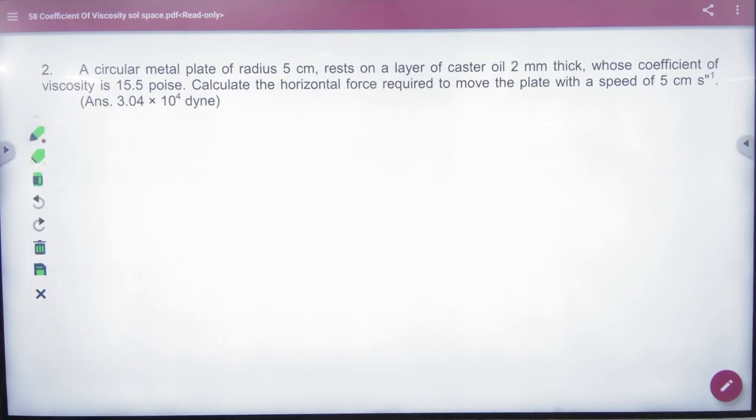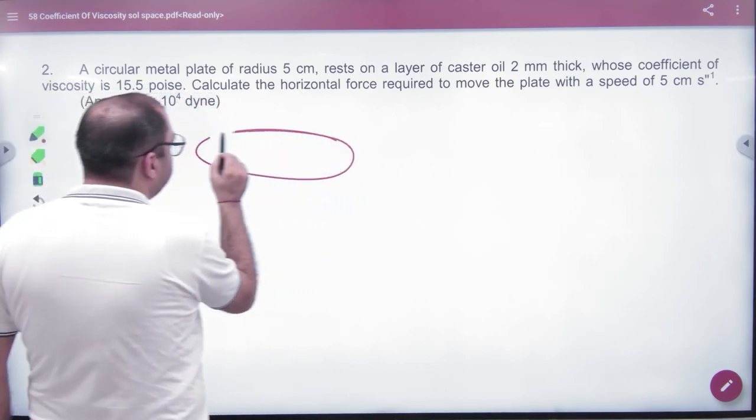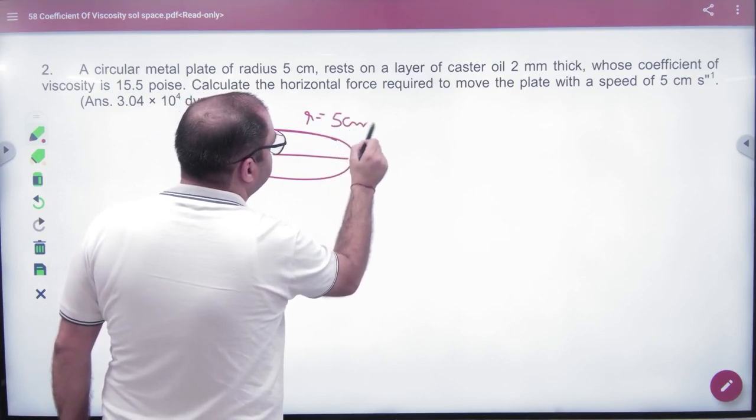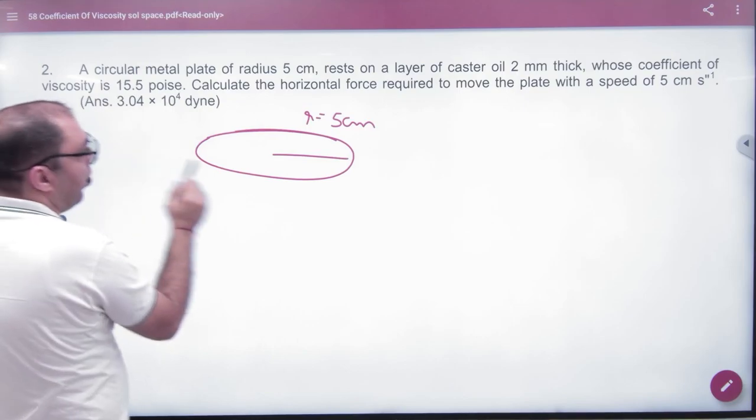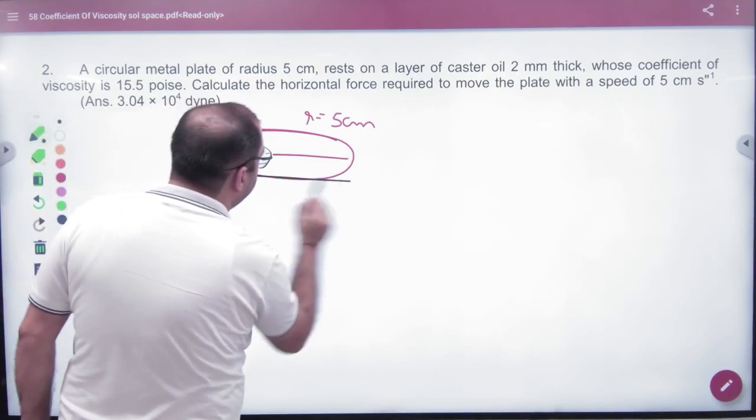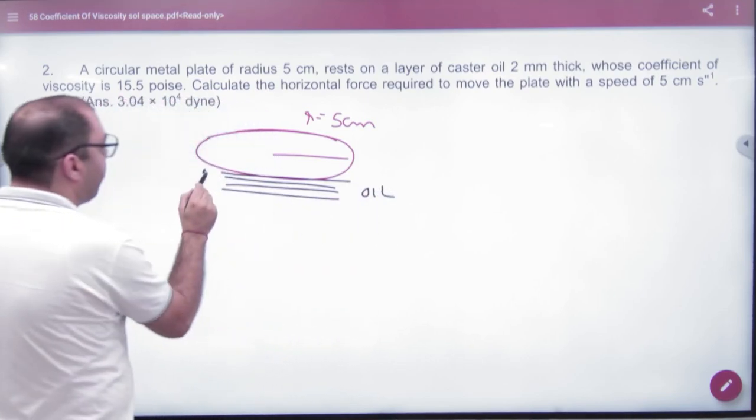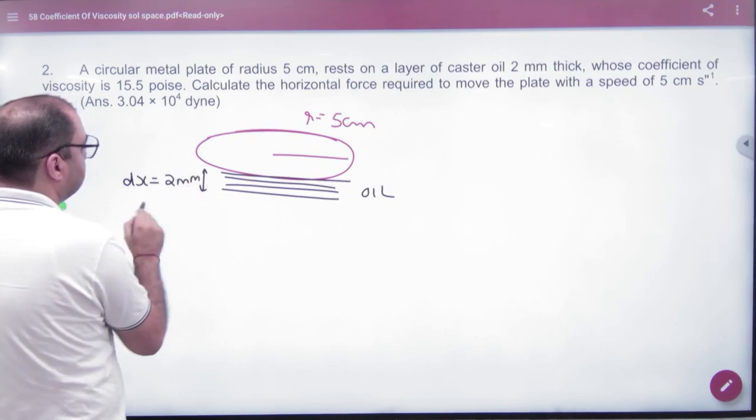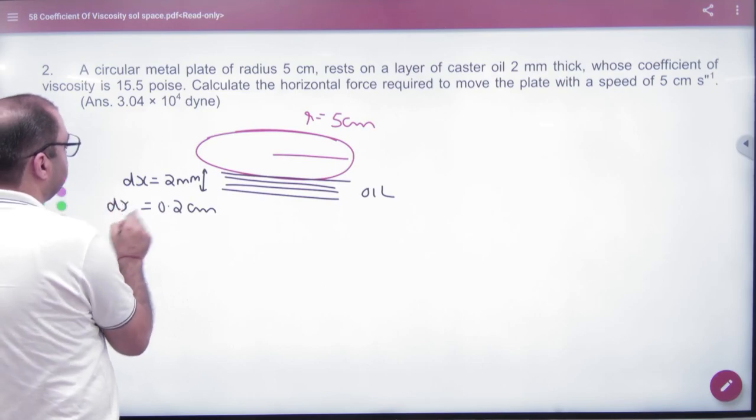A metal plate with radius 5 cm, so the radius R is 5 cm, rests on a layer of castor oil, 2 mm thick. So here oil, 2 mm thick. Dx value, 2 mm given, 0.2 cm thick.